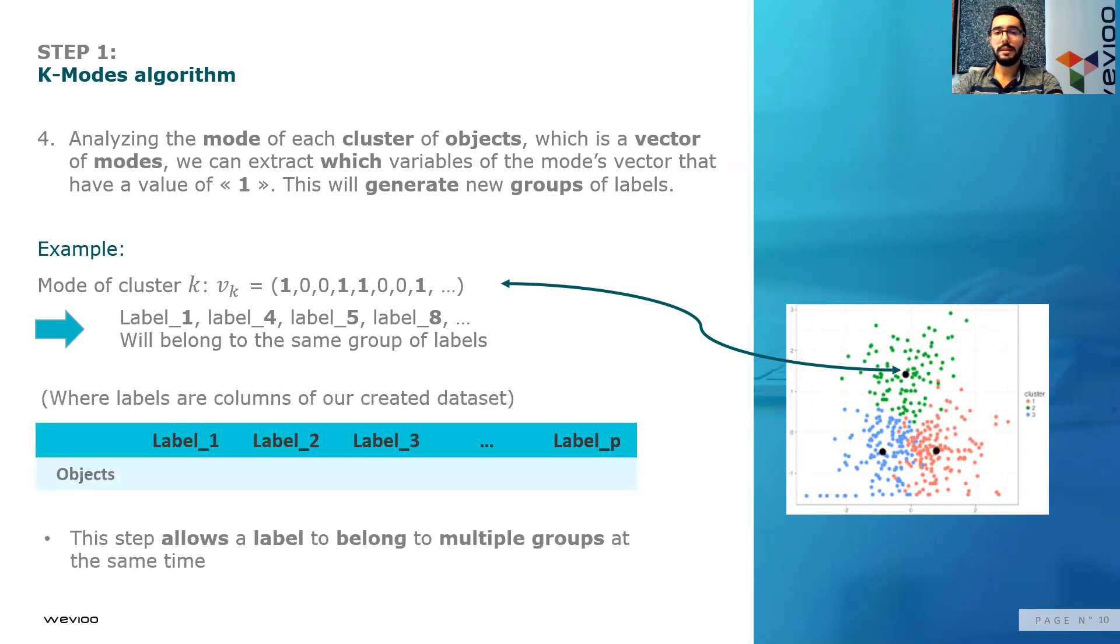Reminding you again that these are the variables of our flattened dataset. This step also allows a label to belong to multiple groups at the same time.